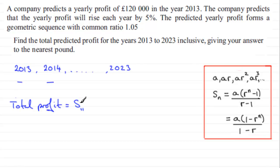So if I use the top one, we've got S11 turns out to be the first term A, which is 120,000. We multiply this by the common ratio, which is 1.05 to the power of n, n being 11, then minus 1, and then all of this is divided by r minus 1, 1.05 minus 1.